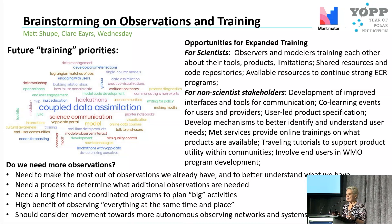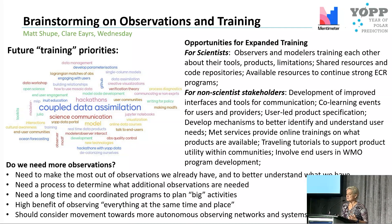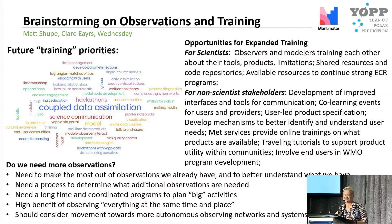A word cloud on future training priorities showed coupled data assimilation as the main one, with a lot around data more broadly — hackathons, making MODFs, and explaining how to use the data and products created during YOPP. For expanded training opportunities separated into scientists versus non-scientist stakeholders: for scientists, observers and modelers training each other about their tools, products, and limitations; providing shared resources and code repositories; and available resources to continue strong early career researcher programs.